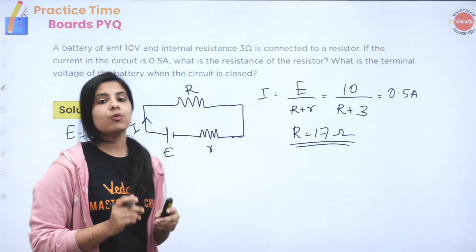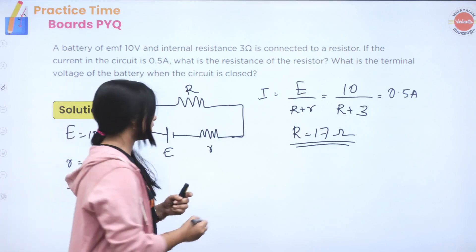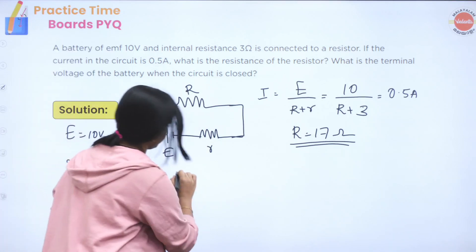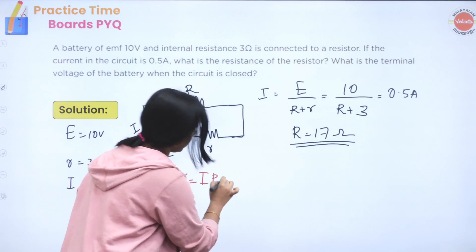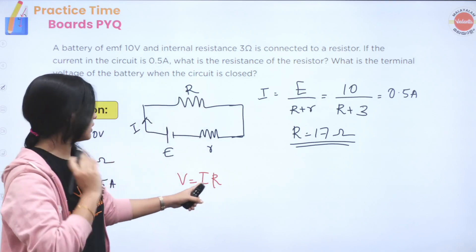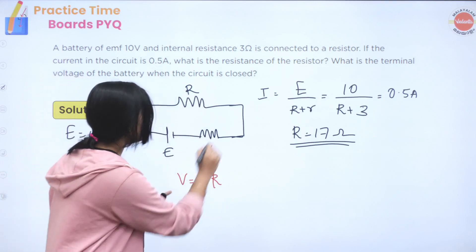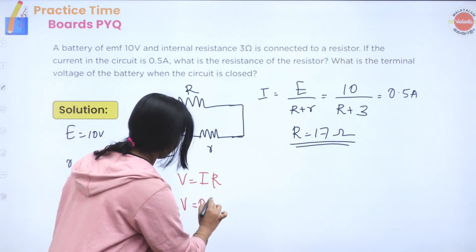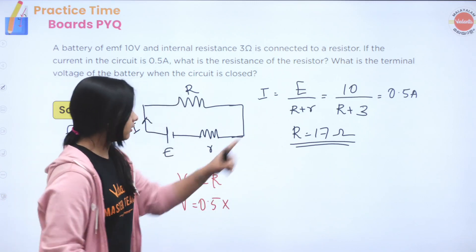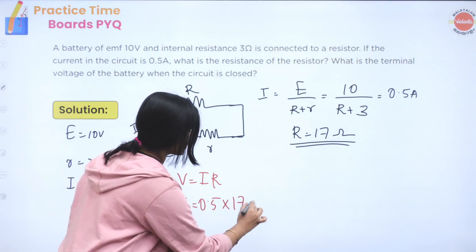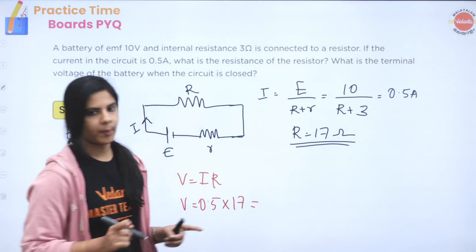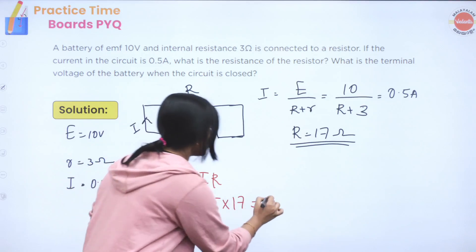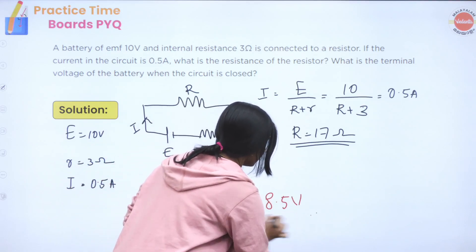Now for the terminal voltage: V = IR. We have I = 0.5 ampere and R = 17 ohm. So V = 0.5 × 17, which equals 8.5 volt. The terminal voltage of the battery when the circuit is closed is 8.5 volt.